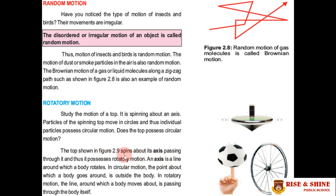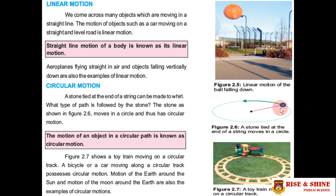As shown in figure 2.9, the top spins about its axis passing through it, and thus it possesses rotatory motion. The definition of an axis is: a line around which a body rotates. In circular motion, the point about which a body goes around is outside the body.